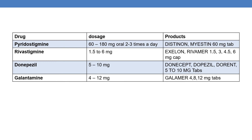The next drug is pyridostigmine. It is available in 60 to 180 mg oral tablets given 2 to 3 times a day. Available marketed products are Distinon and Myastin, as 60 mg tablets.